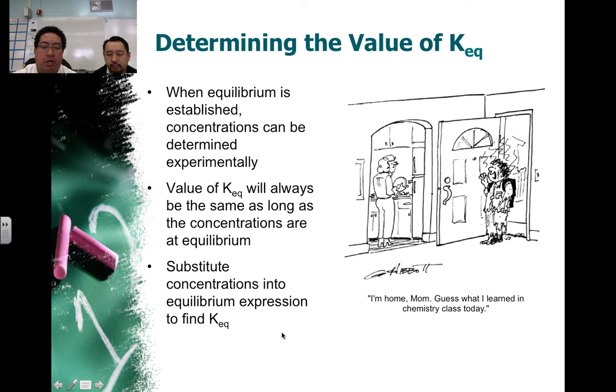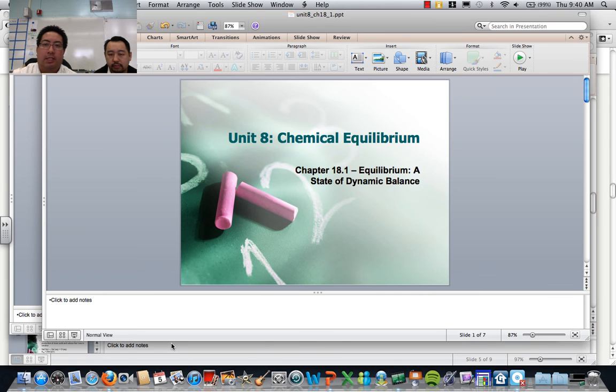And so if we're looking to solve for concentrations at equilibrium, what we can do sometimes is we can substitute in concentrations we know at equilibrium and then solve for the ones that we don't know if we know that K_eq is at a given value. Yeah, if we have the value for it. That's it.